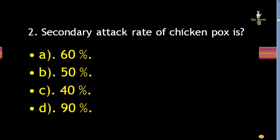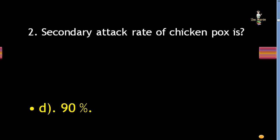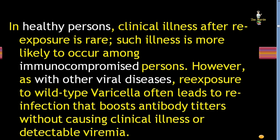Incubation period of chicken pox is about 14 to 16 days. Next question: secondary attack rate of chicken pox is 60%, 50%, 40%, or 90%? Correct answer is 90%. In healthy persons, clinical illness after re-exposure is rare and more likely among immunocompromised persons. Re-exposure to wild-type varicella often leads to reinfection, boosting antibody titers without causing clinical illness or detectable viremia.